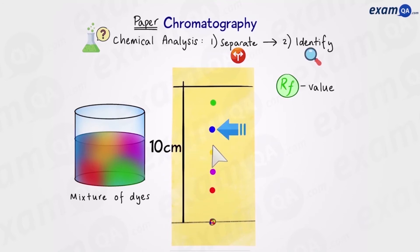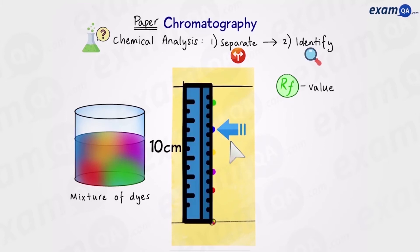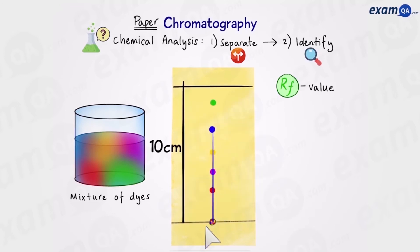We want to calculate the RF value for this spot. So we're going to draw a line from the middle of this spot to the start line. And let's say that was 7 centimeters.